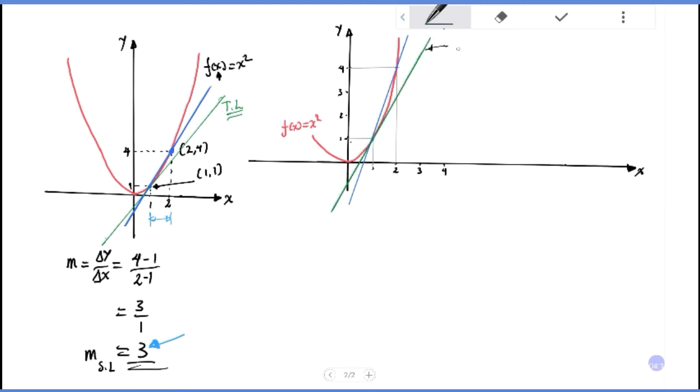Here is the tangent line at point P. Here is the graph showing the point. We introduce point Q at coordinates (1 plus delta x, the value at that point). The value is (1 plus delta x) squared.